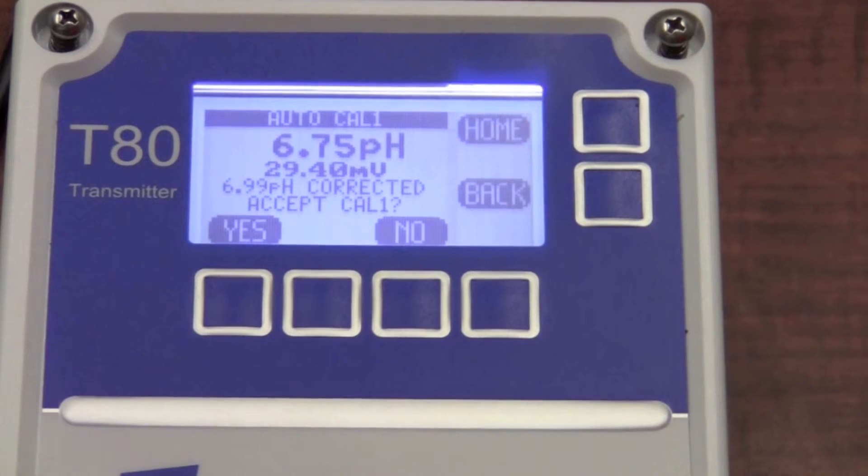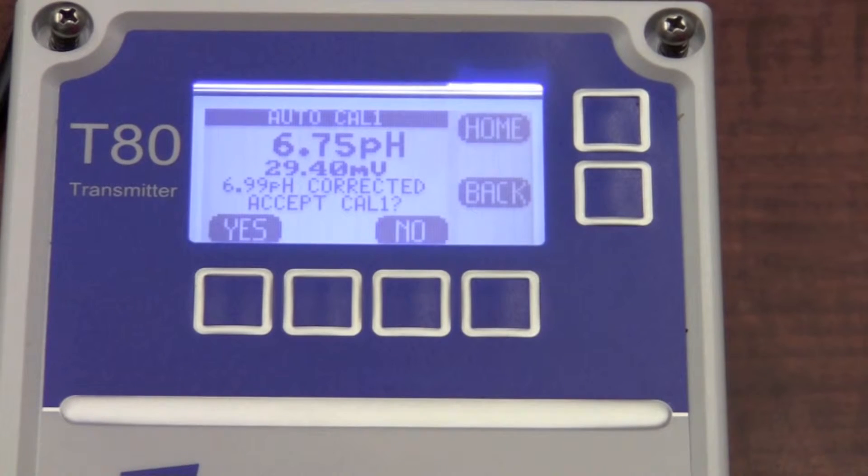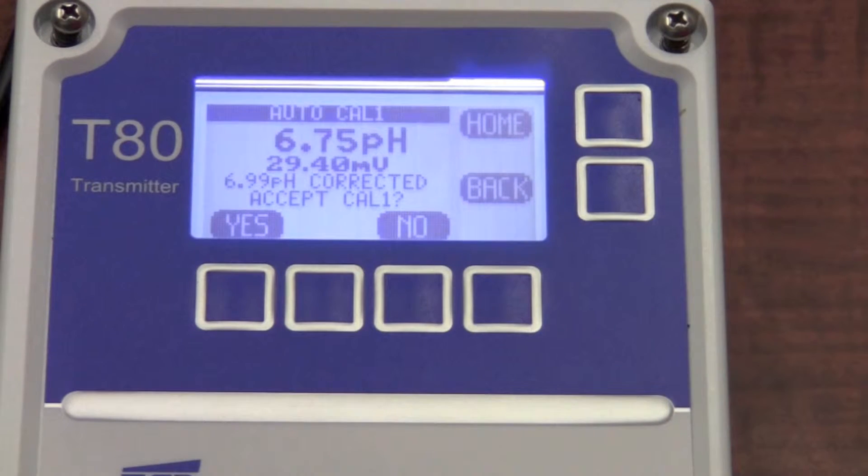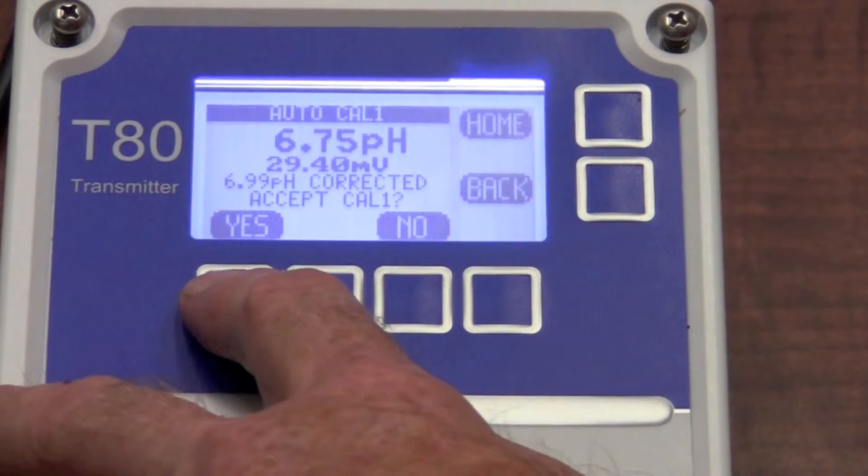Once stabilization has been satisfied, it's going to come up and say this is 6.99 pH. Correct it. Do we accept it? If this was a 7 pH buffer, 6.99 is correct. If it's not, if there was another buffer solution you're using and you wanted to correct, it allows you to make a manual entry. For our intents and purposes here, we're going to accept it as yes.